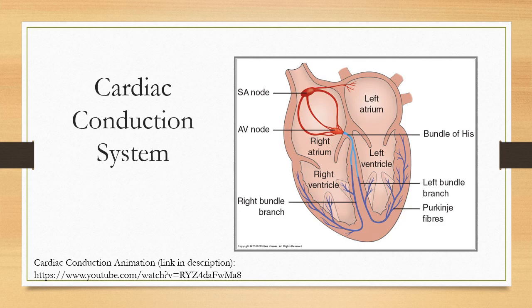The SA node, AV node, and Purkinje fibers each have general rates at which they fire to generate a heartbeat. The SA node generates a heartbeat at 60 to 100 beats per minute, the AV node at 40 to 60 beats per minute, and the Purkinje fibers at 20 to 40 beats per minute. If one of the previous nodes fails, the remaining nodes take over at a slower rate, though adequate perfusion may be a concern.